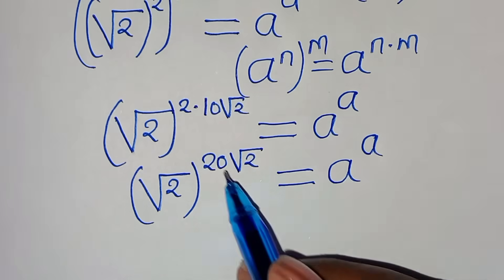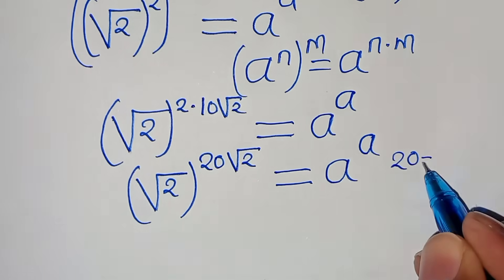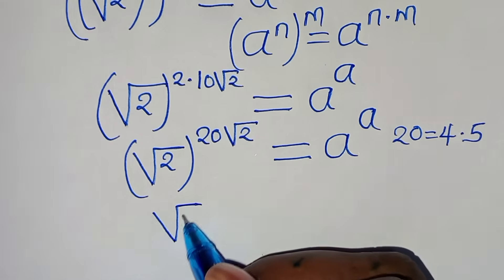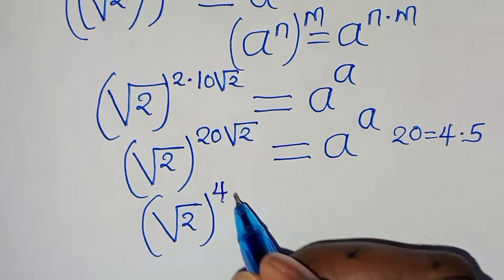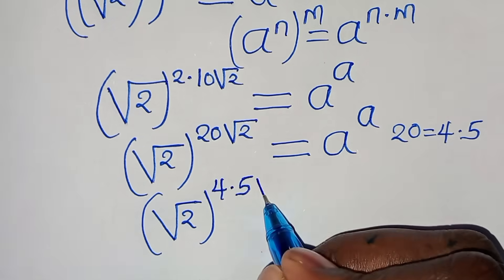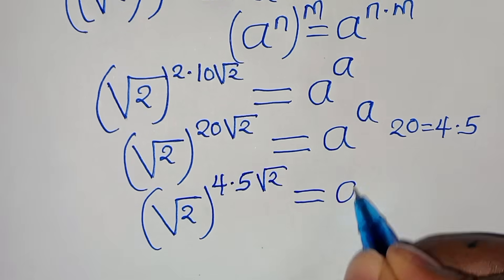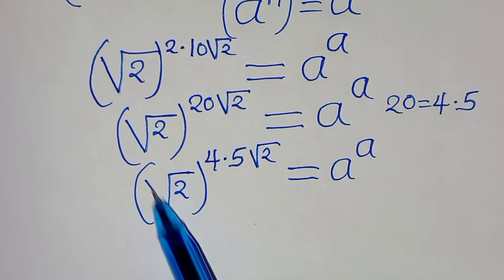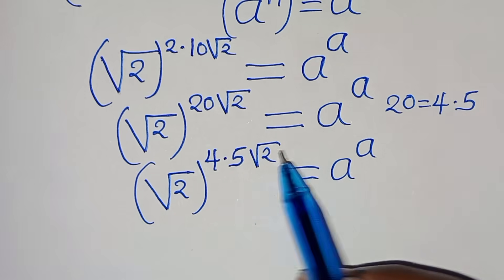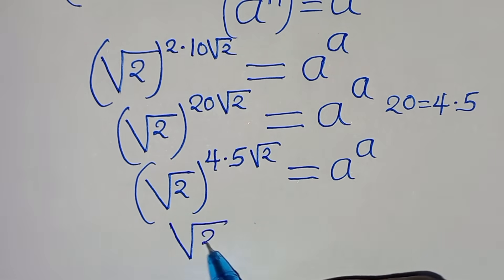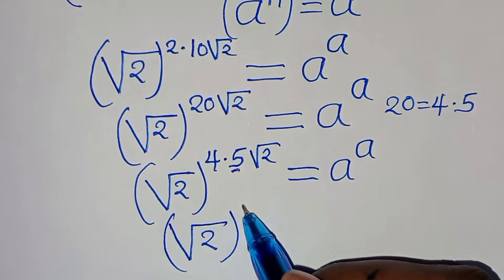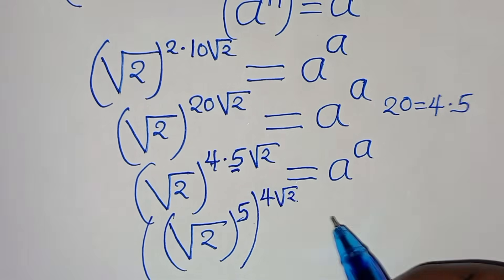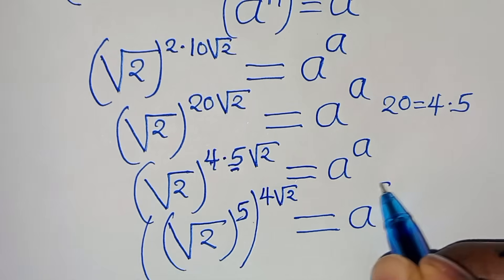The next step is to express 20 as 4 times 5. So we have square root of 2 raised to the power of 4 times 5 square root of 2, equal to a to the power of a. We can rewrite this as square root of 2 raised to the power of 5, then raised to the power of 4 square root of 2, equal to a to the power of a.